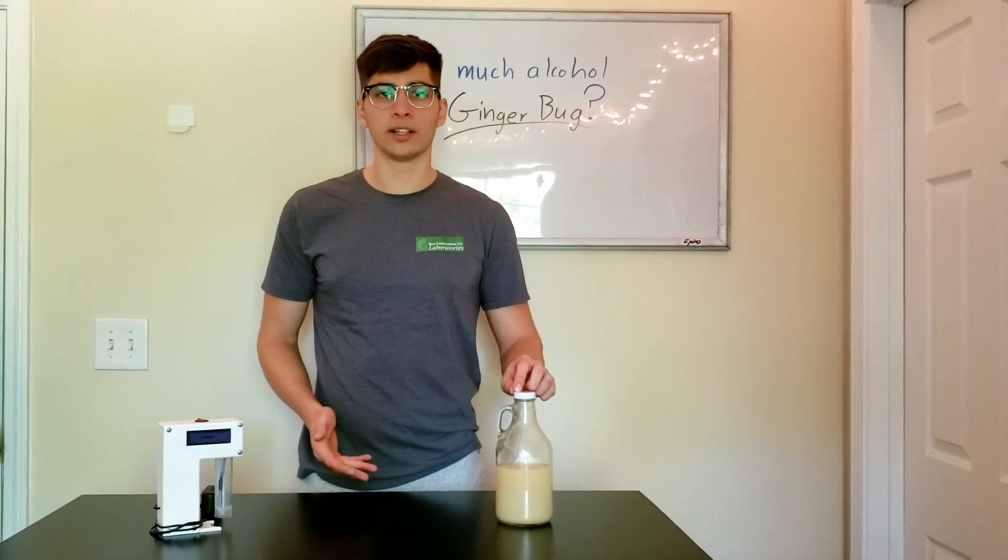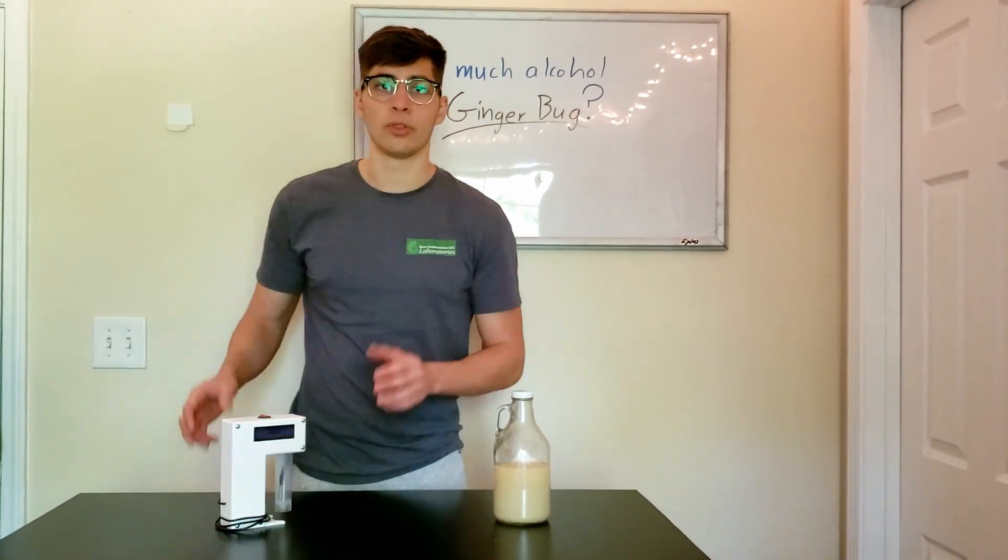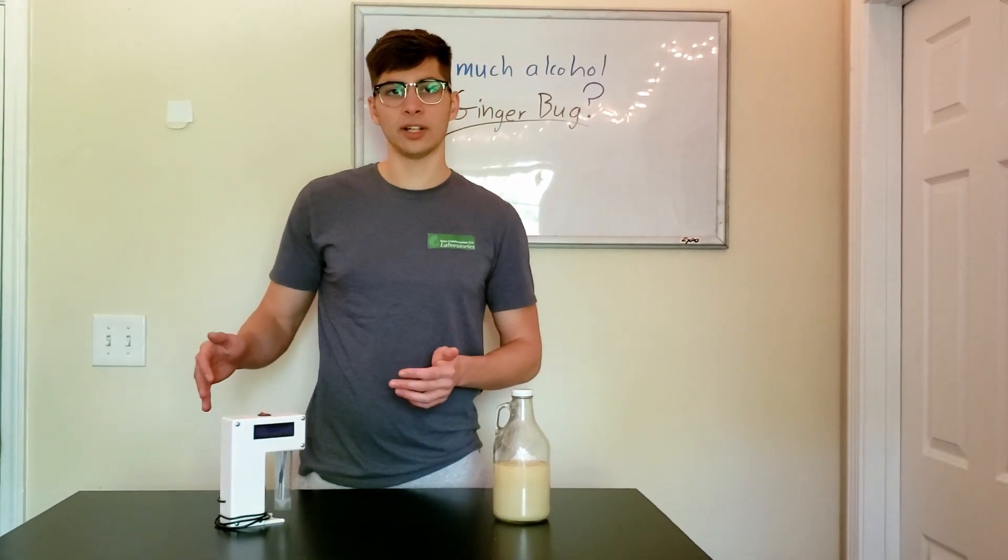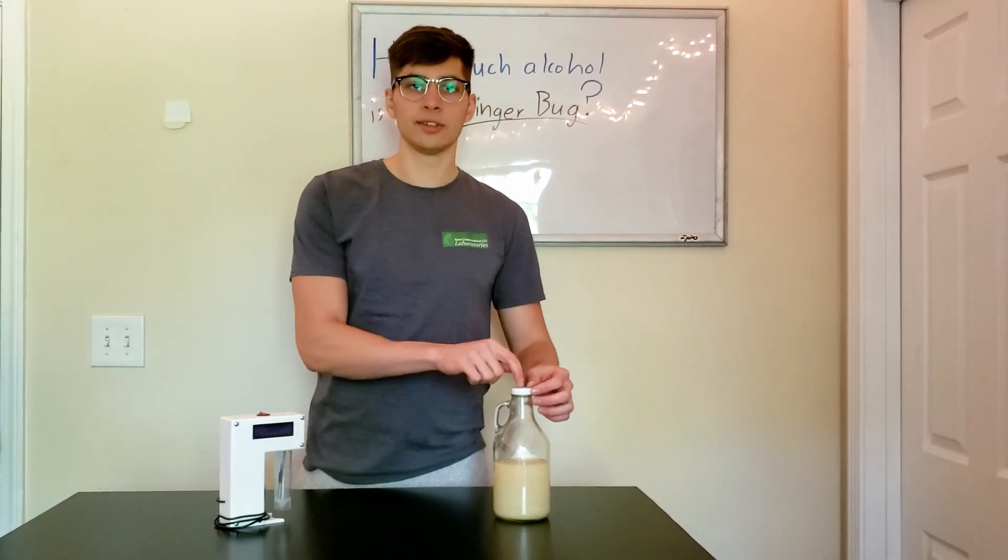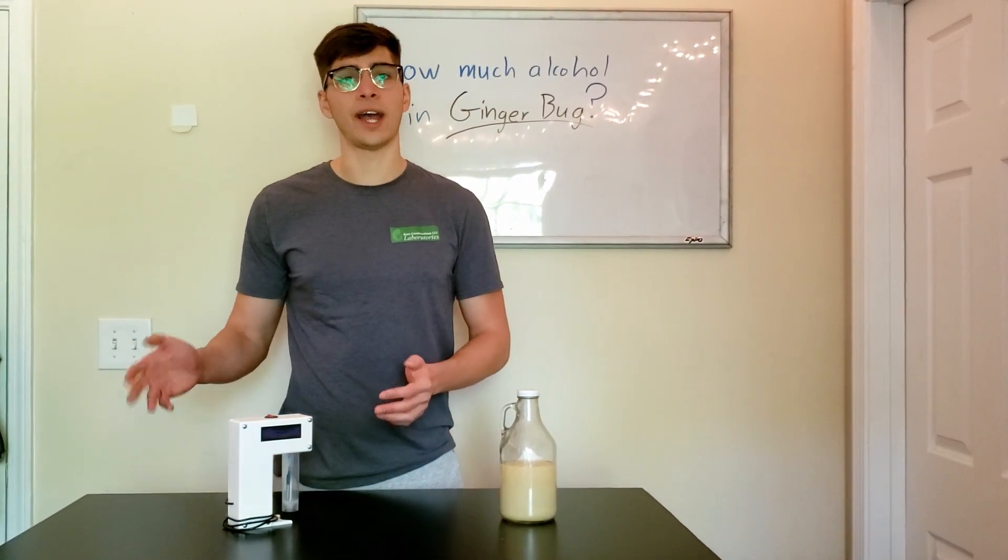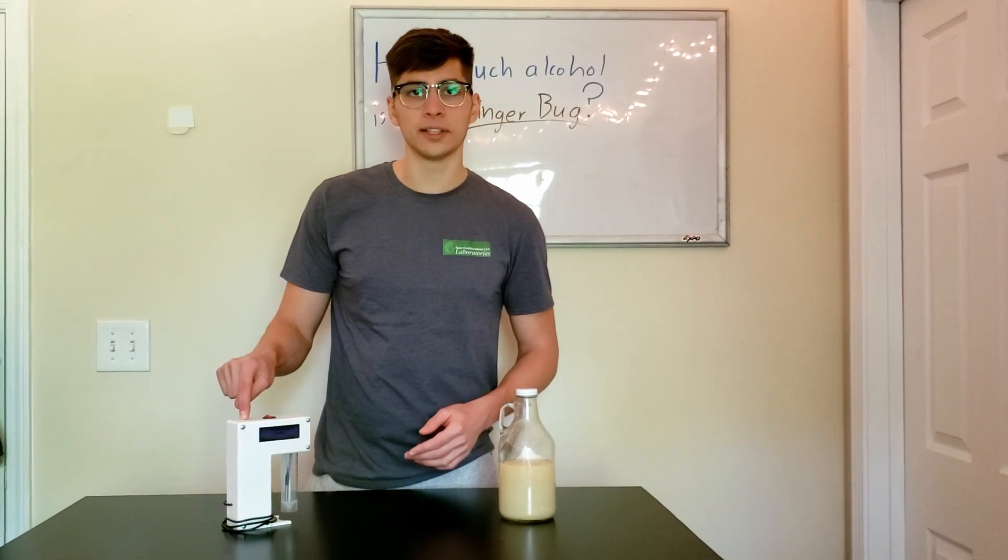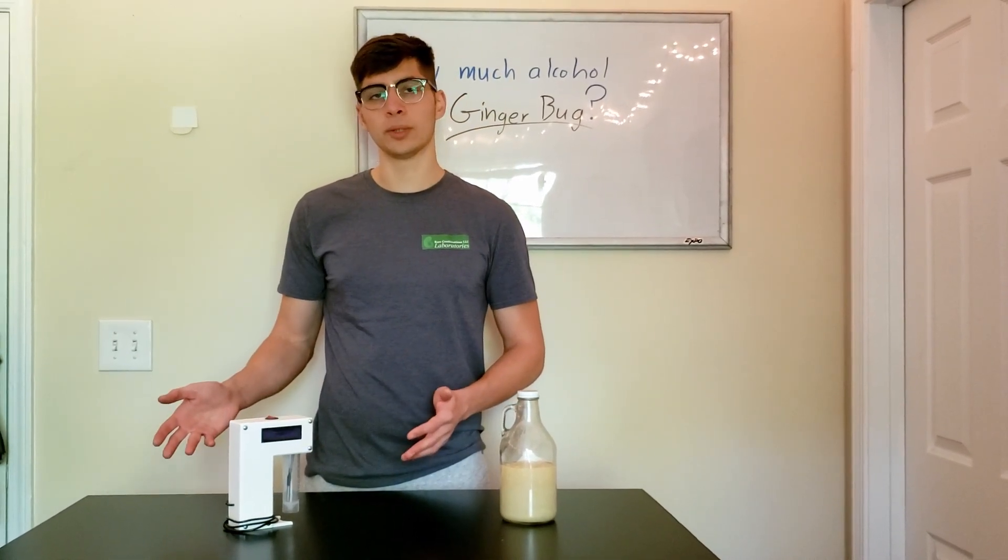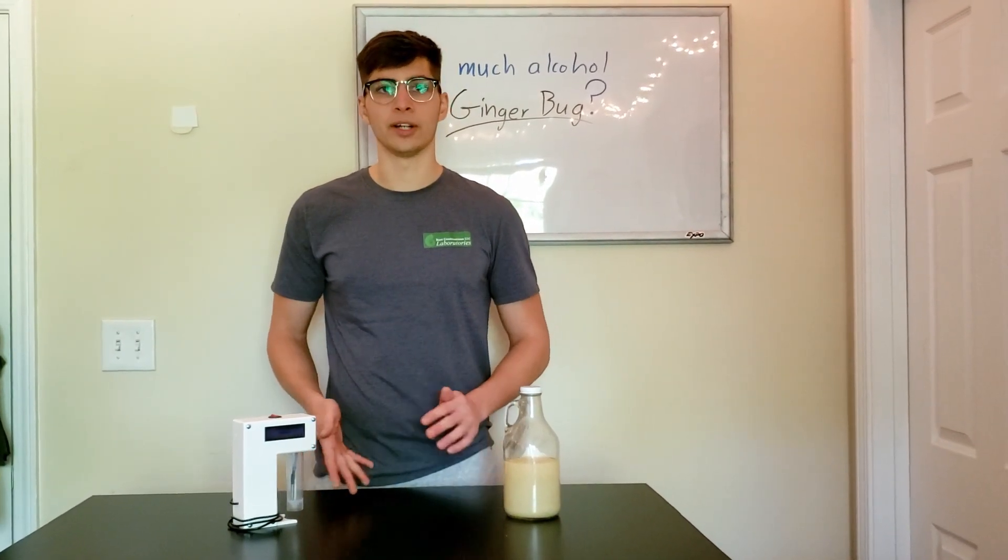So to find the alcohol content in this ginger bug, we're going to be using this alcohol detector. I want to set up my own calibration curve at room temperature. This ginger bug is at room temperature, and all of my calibration standards are already at room temperature. First I'm going to plug in the detector, let it warm up for 15 minutes, and in that time I'll be able to measure out my calibration standards and have them all ready.